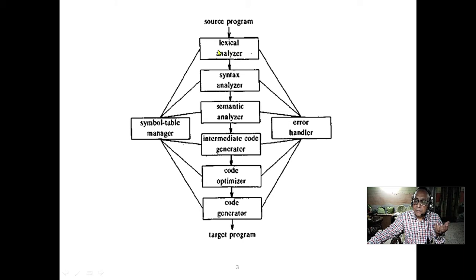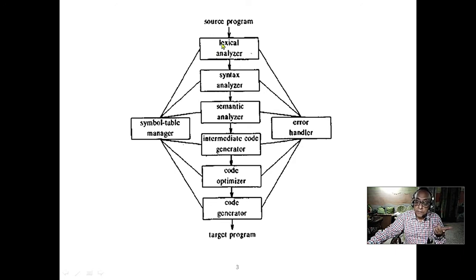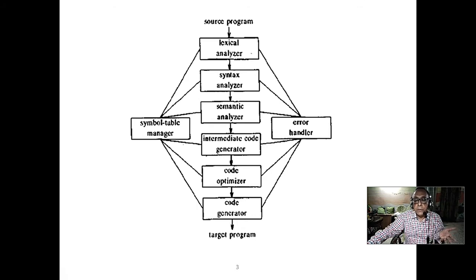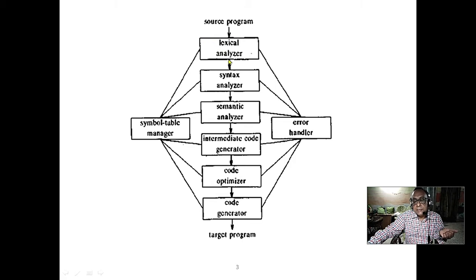Lexical analysis can be done by regular expression. Any variable checking — it should start with an alphabetic character, not a number, but later it can have a number. An integer should not have any decimal point; a floating point should have a decimal point. These things can be done very well by regular expression. A lexical analyzer is essentially a deterministic finite automaton.